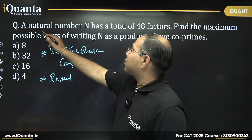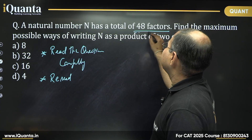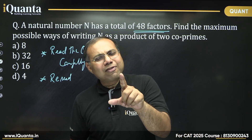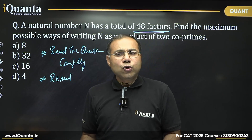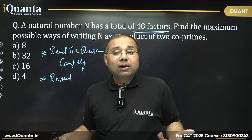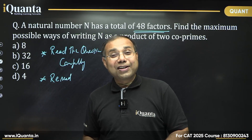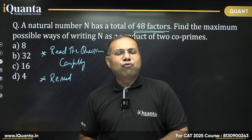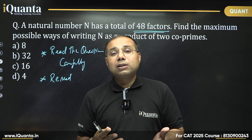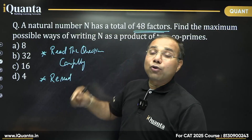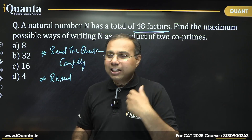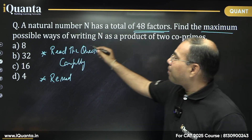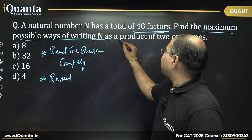Let's read it together. It says: a natural number n has a total of 48 factors. Is there only one positive integer which has 48 factors? No, there are many — actually infinitely many. There are certain formats of numbers; you can find their prime factorization, but there are infinitely many numbers which have exactly 48 factors. The question is: find the maximum possible ways of writing this number as a product of two co-primes.